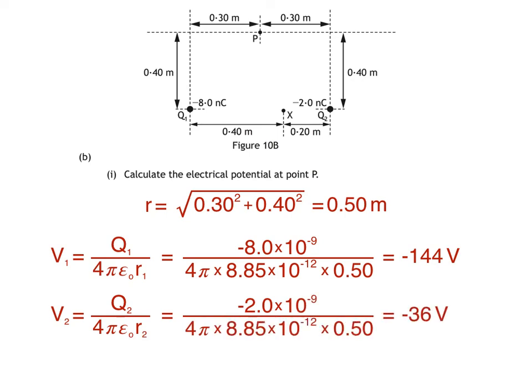Again, because electrical potential is a scalar quantity, we simply add the two values. At least this time we have the room. So the electrical potential at P is negative 144 plus negative 36, which is negative 180 volts.